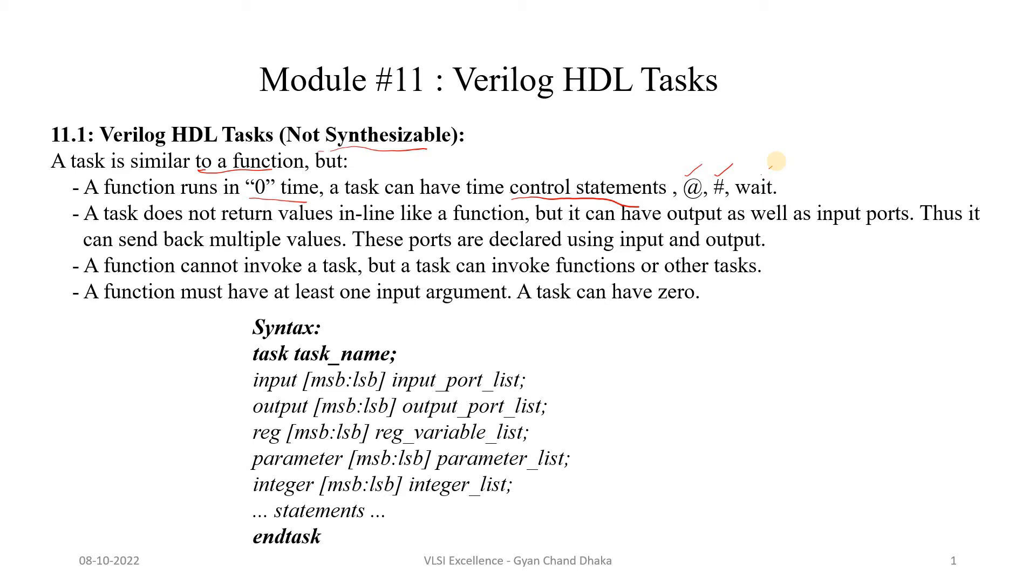That means a function should execute in zero simulation time, but a task can take more time. A task does not return value inline like a function. A function always returns a single value. A function can take multiple input arguments, but it only returns a single value.